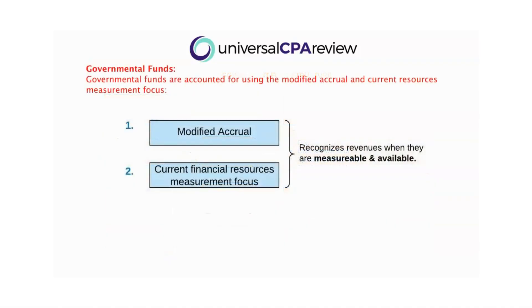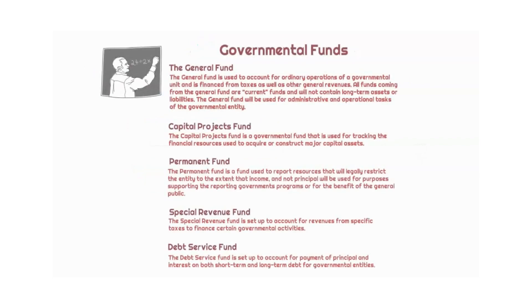Before we dive into it, when you think about governmental funds, you're thinking modified accrual and current financial resource measurement focus. So our five governmental funds are going to be the general fund, the capital projects fund, the permanent fund, the special revenue fund, as well as the debt service fund.